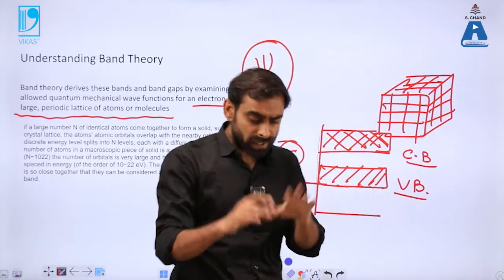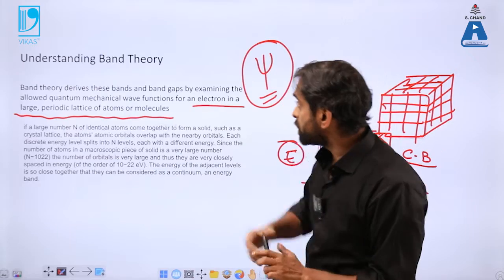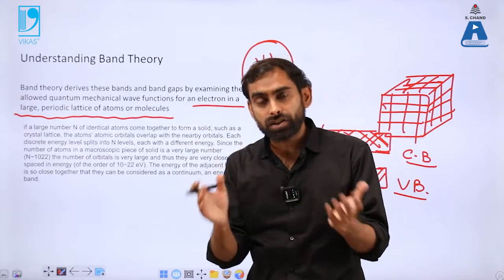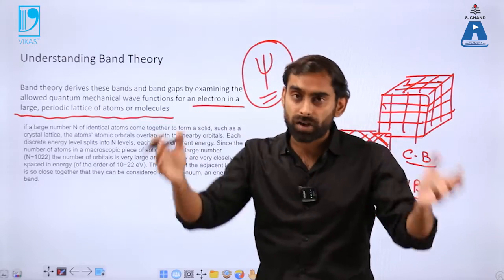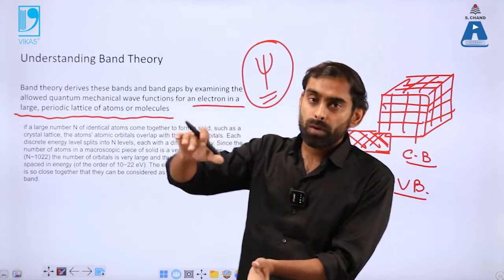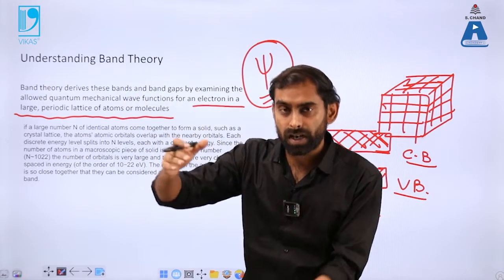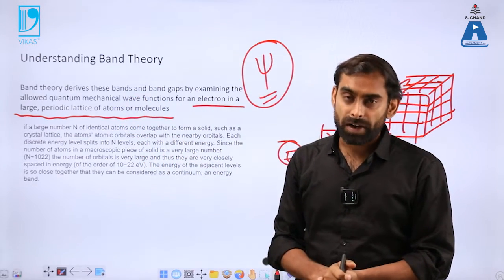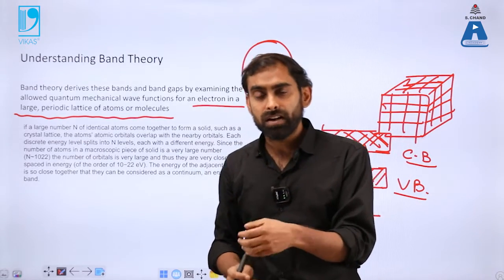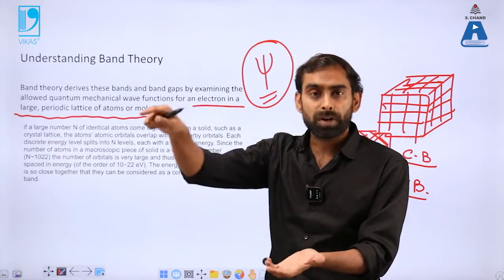They constitute a different band called the conduction band. The entire logic or concept of band theory lies in the fact that in a crystal or lattice or macromolecular structure, we have two distinct bands: the conduction band and the valence band.